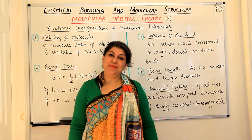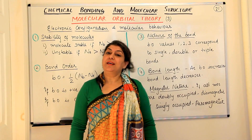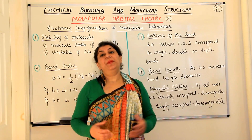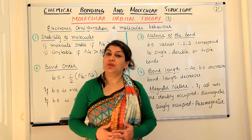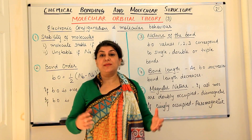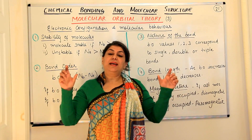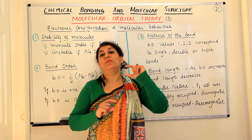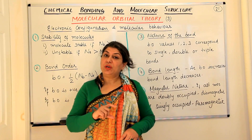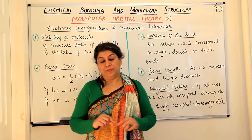Hello, I am Seema and welcome to part 21 of the chapter Chemical Bonding and Molecular Structure. I have been explaining the molecular orbital theory to you, and we discussed the linear combination of atomic orbitals — how two atomic orbitals combine and result in the formation of two molecular orbitals: one bonding molecular orbital and one anti-bonding molecular orbital.